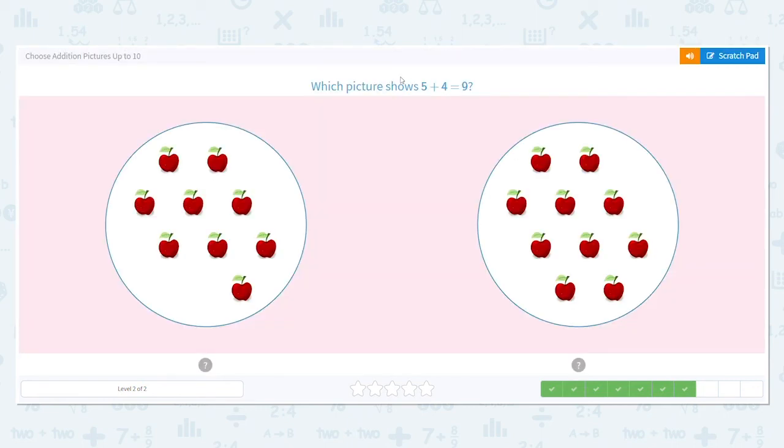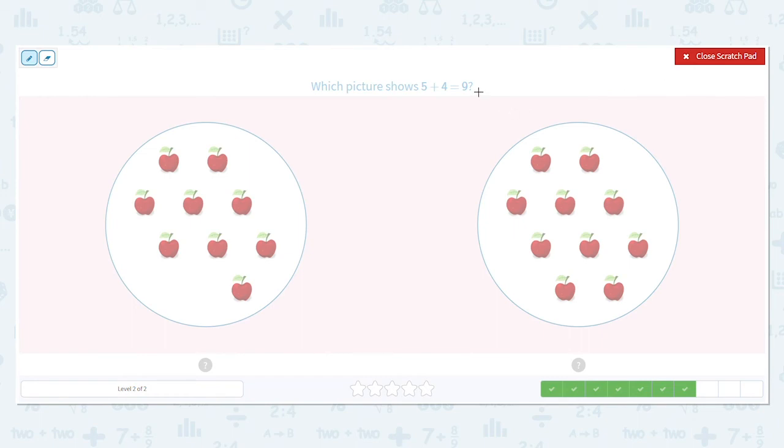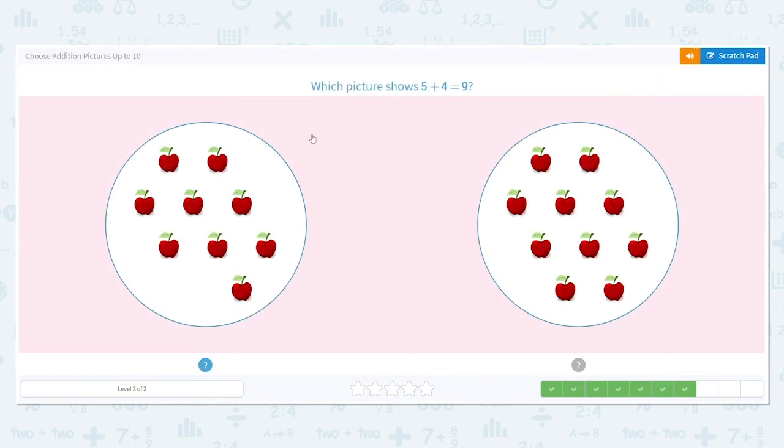Next one, which picture shows 5 plus 4 equals 9? What is the total number of apples we want? 9. Let's count up each side to see which side works. 1, 2. Keep counting. This side has 9, but we don't just want to answer. Let's check the other side. Keep counting. 1, 2. Keep counting. This side has 10. So which is our answer? Which side shows 9? Good job.